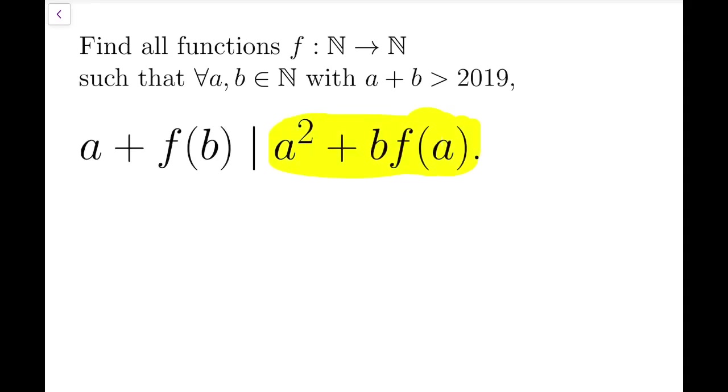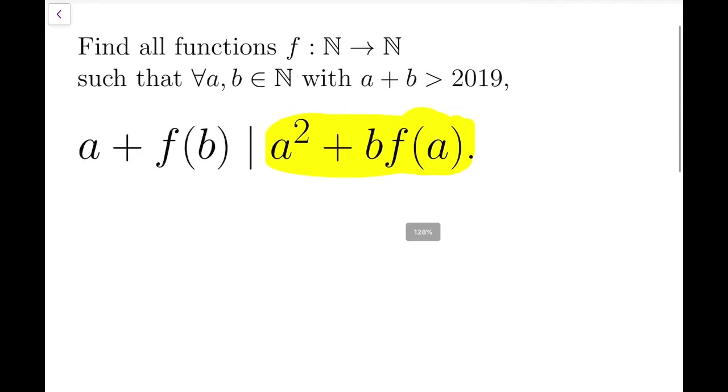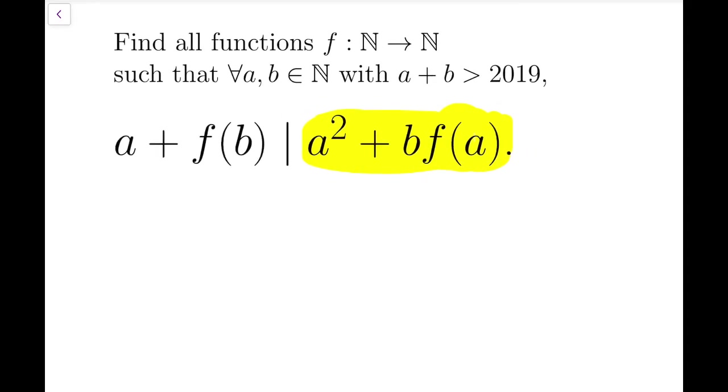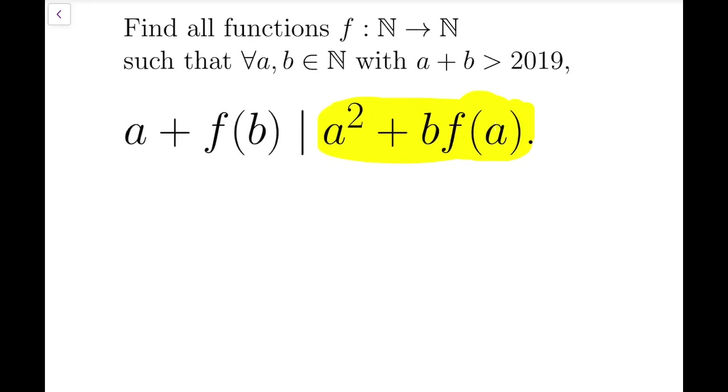So I'm going to consider this expression, this part, a squared plus b times f of a, and I want to make some primes from this. And the way I'm going to do this is to make use of the Dirichlet theorem. It says, so that's Dirichlet.